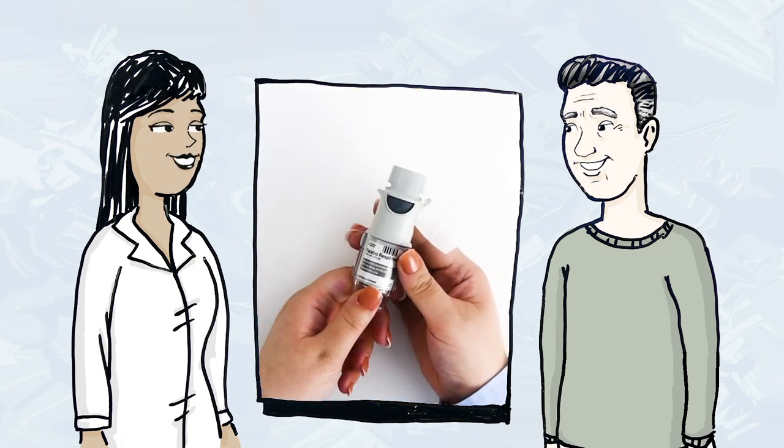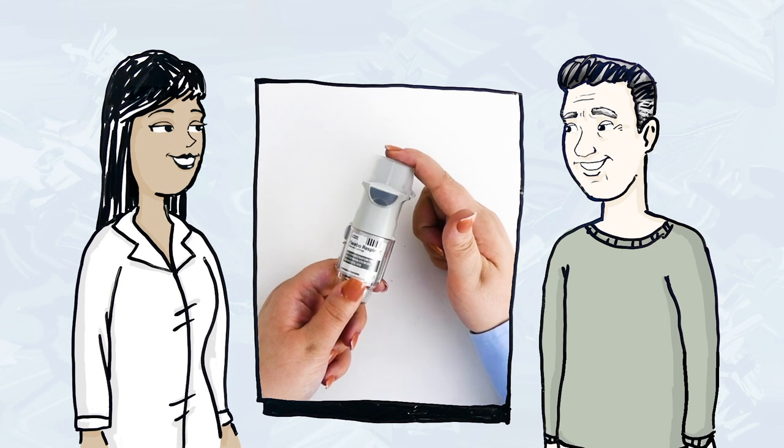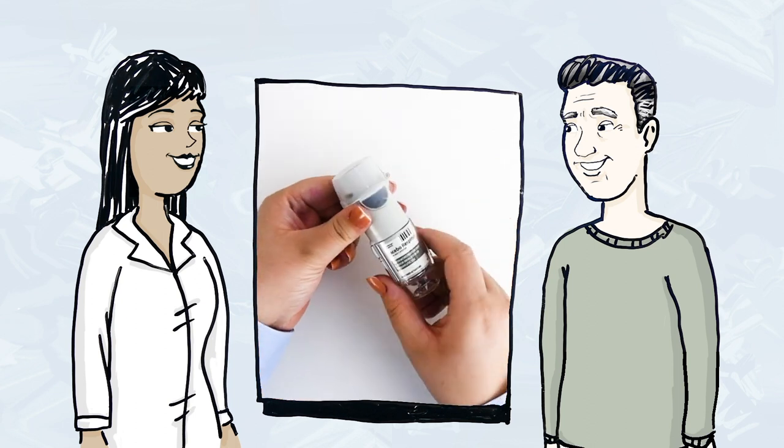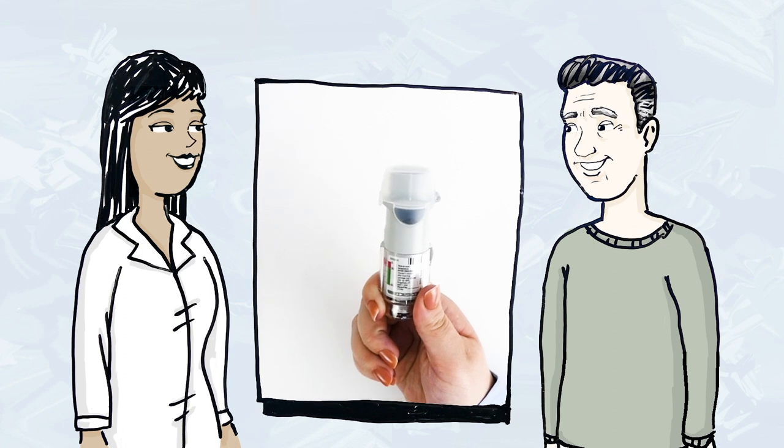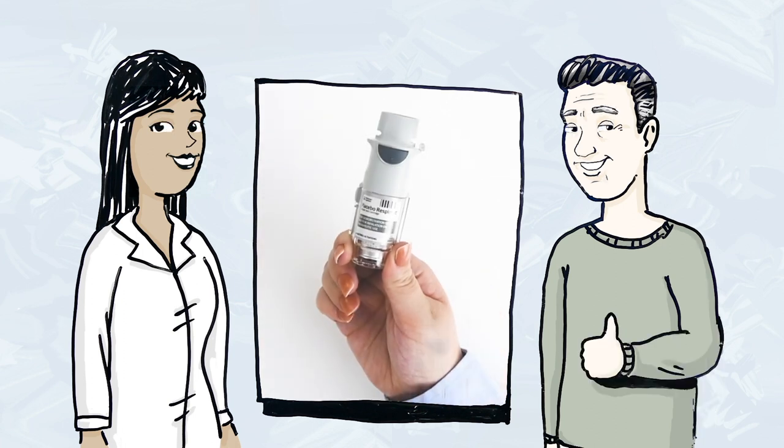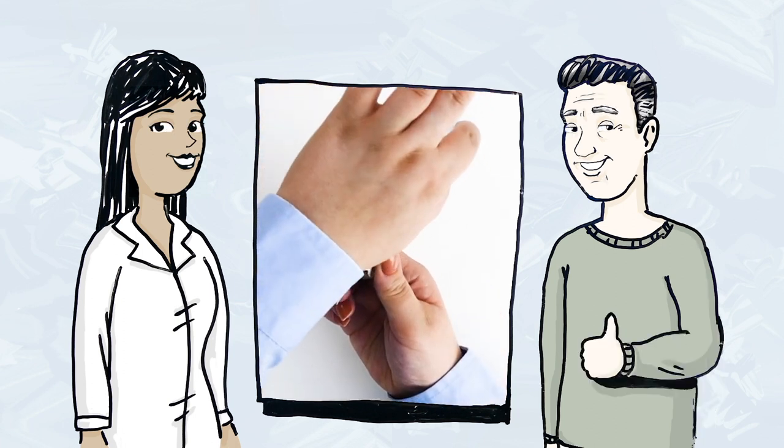Between each spray, I remind Henry to close the cap and turn the base until he hears a click. The arrows on the label are there as a reminder of the direction the base turns. Henry's inhaler is now ready for daily use.